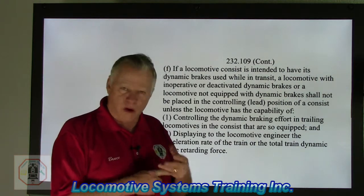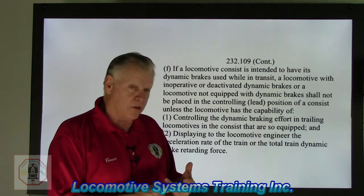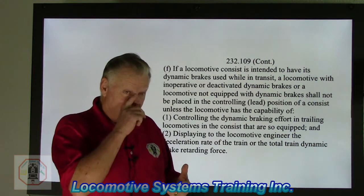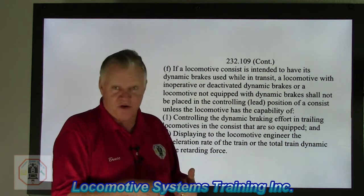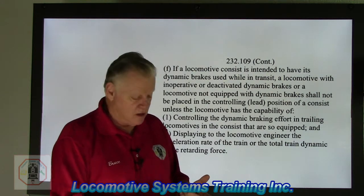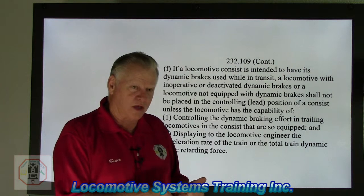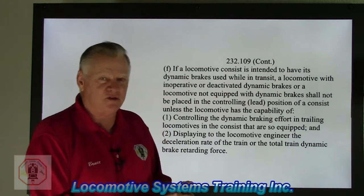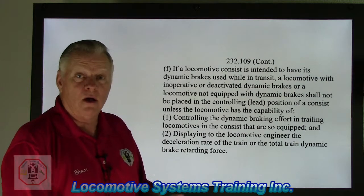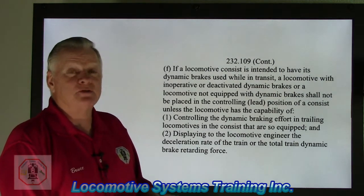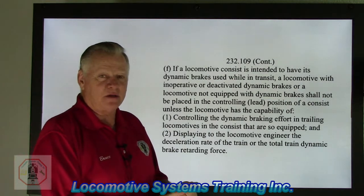So we have different conditions: a locomotive equipped with working dynamic braking; a locomotive where dynamic braking is inoperative or defective; a locomotive that had dynamic braking but sufficient equipment has been disabled or removed; or a locomotive that never had dynamic braking to begin with.